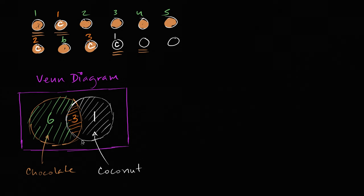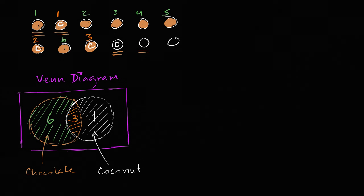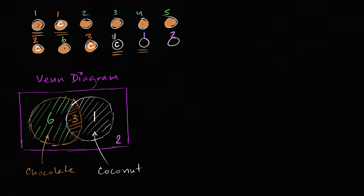The last thing we'd want to fill in — notice six plus three plus one only adds up to 10. What about the other two? The other two are neither chocolate nor coconut. That's one, two. These are neither chocolate nor coconut, and I could write these two right over here. So that's one way to represent the information of how many have chocolate, how many coconut, how many chocolate and coconut, and how many neither.